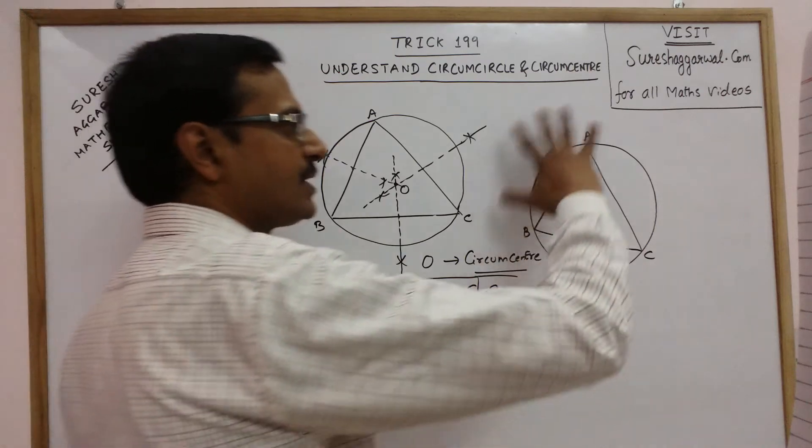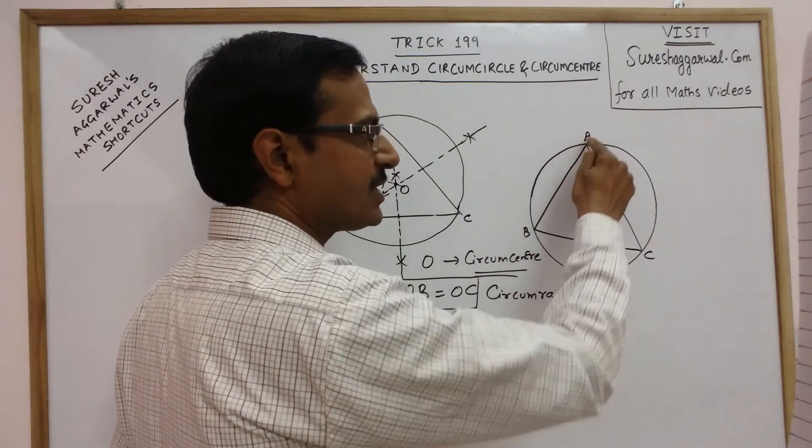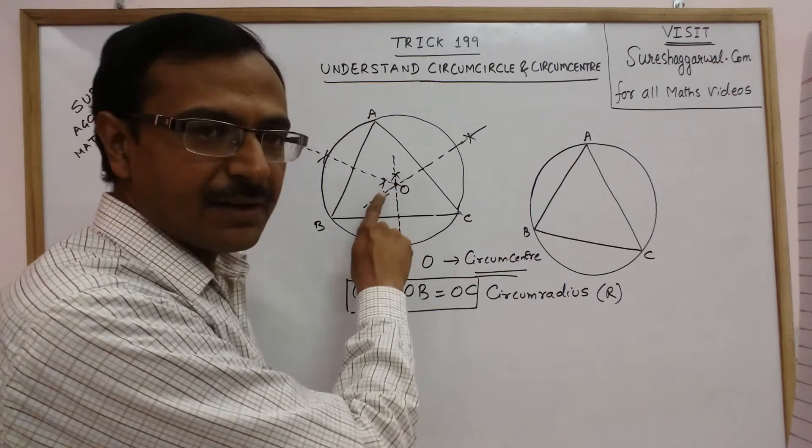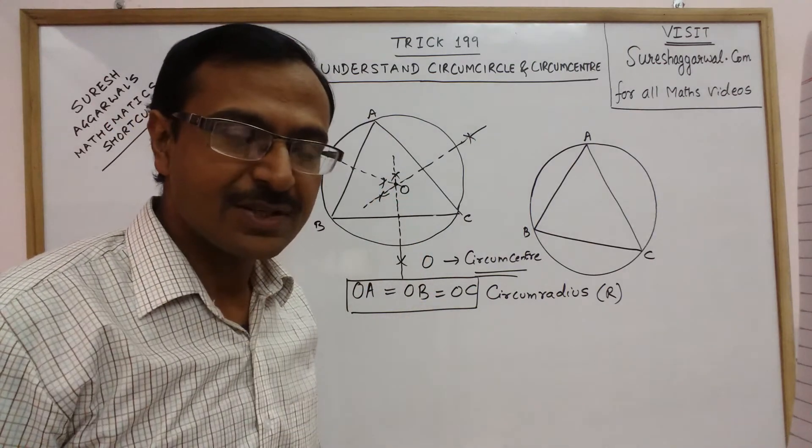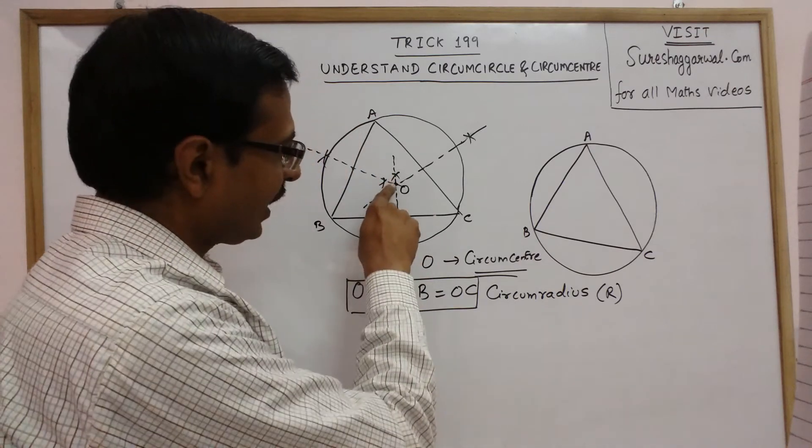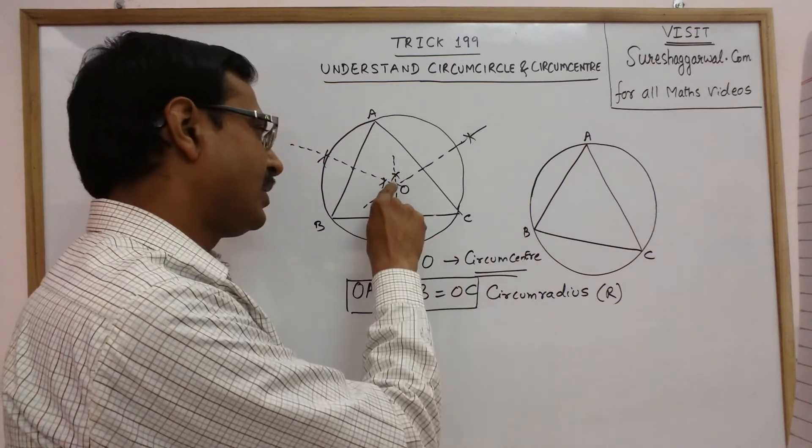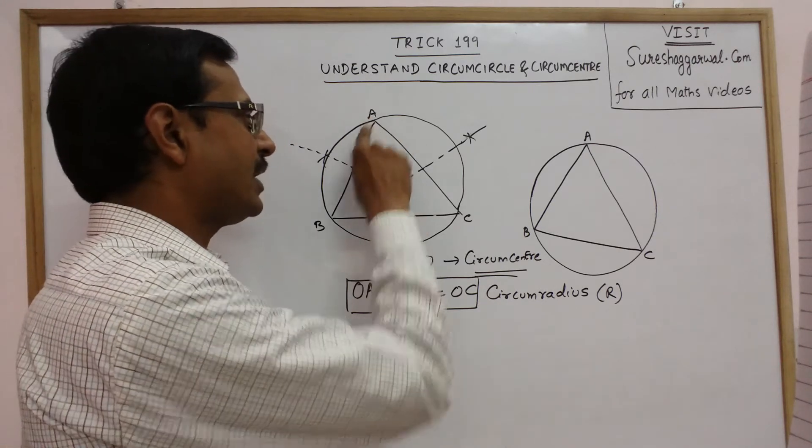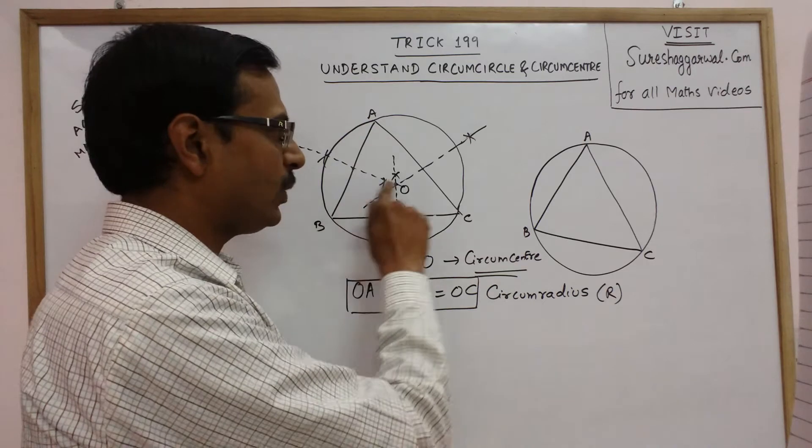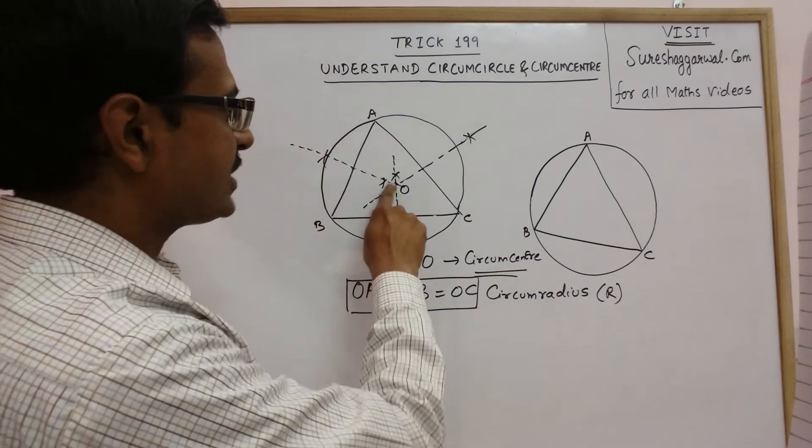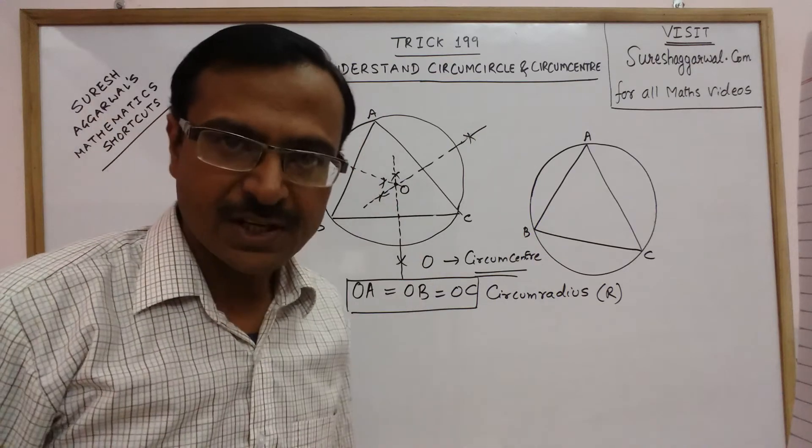Circumcircle which touches the three vertices, circumcenter, the point of intersection of the three perpendicular bisectors of the sides of the triangle and circumradius, this point circumcenter, its distance from A, B or C. OA, OB, OC, these three are circumradius and with O as center, you can draw the circumcircle.